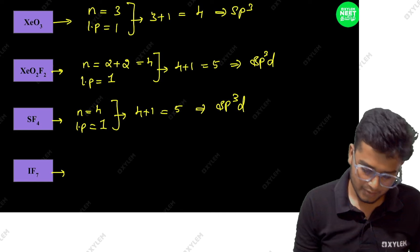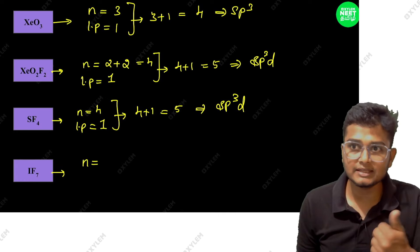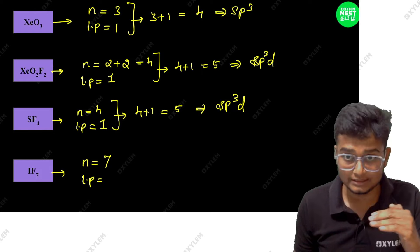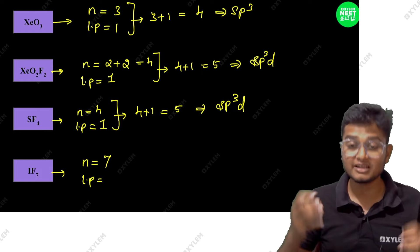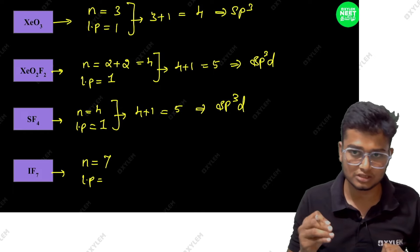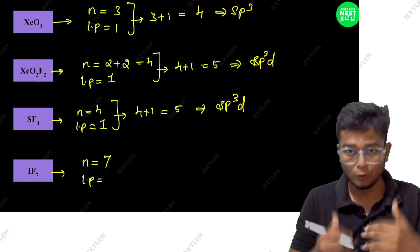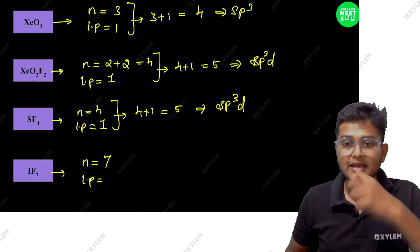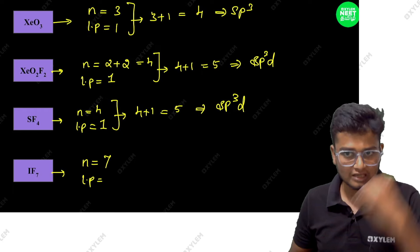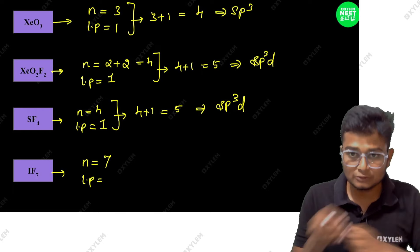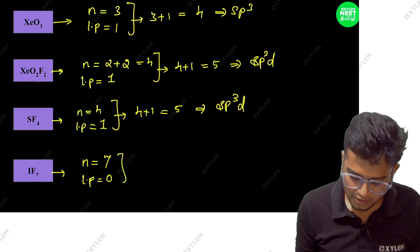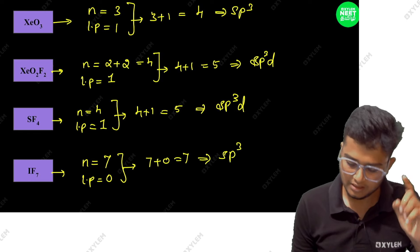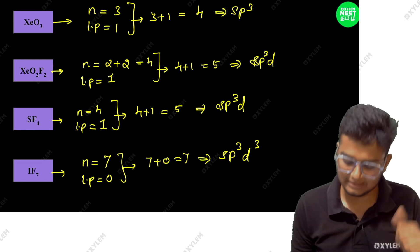Next example: IF7. Number of atoms attached to iodine: 7 fluorine atoms. Lone pairs on iodine: 0. So 7 plus 0 equals 7. Looking at our table: 1 is S, 3 is P, then 4 is D — that gives SP3D3. So IF7 has SP3D3 hybridization.